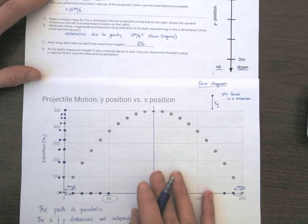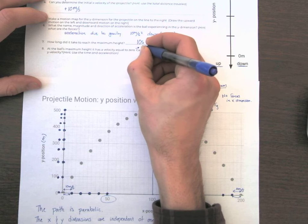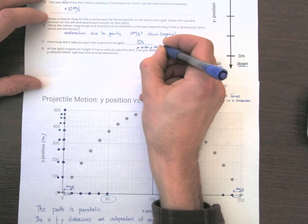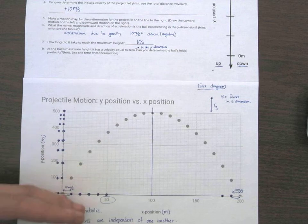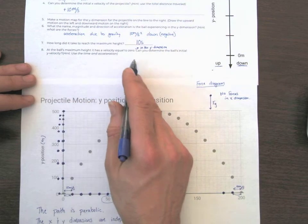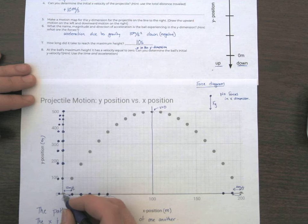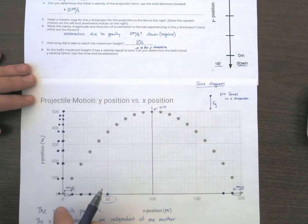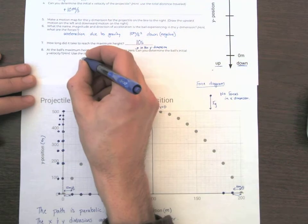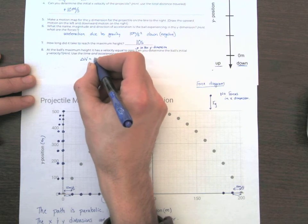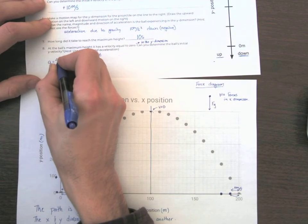This last question is a little bit of a challenge question. It says at the ball's maximum height, it has a velocity equal to 0. And I should note, I did not correct this. In the y-dimension, it definitely is still moving in the x. The velocity in the y is 0. It has come up, it stops for a split second, and it comes back down. So, if the ball has a velocity of 0 at the top, v equals 0. So, can you determine the initial y velocity? So, there was an initial upward velocity here, and it gradually slowed down to 0 in 10 seconds. We can kind of use our kinematic equation that the change in velocity should just be the acceleration times time.